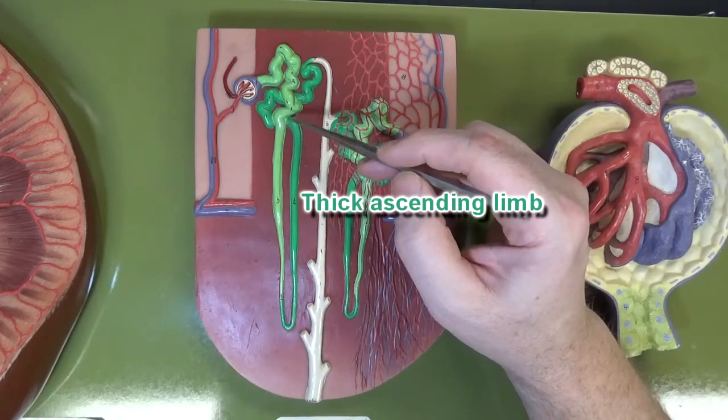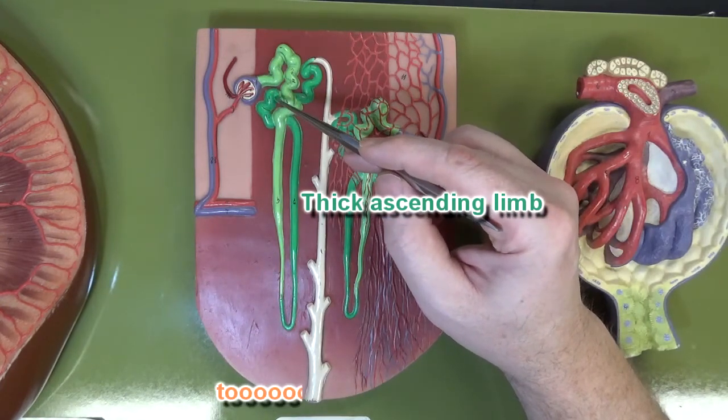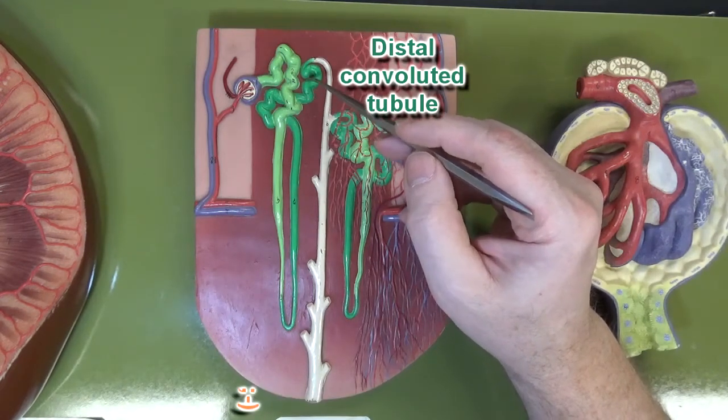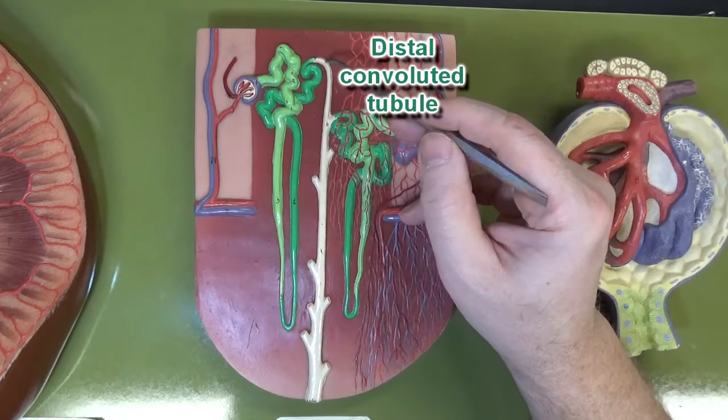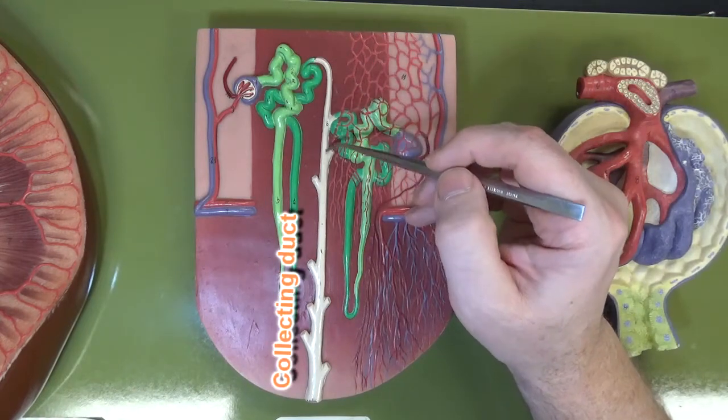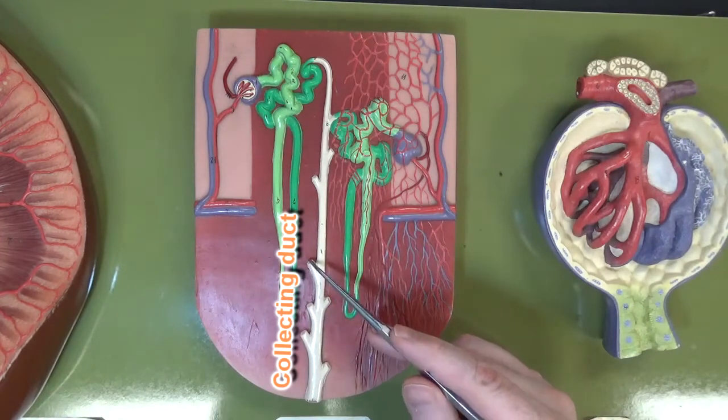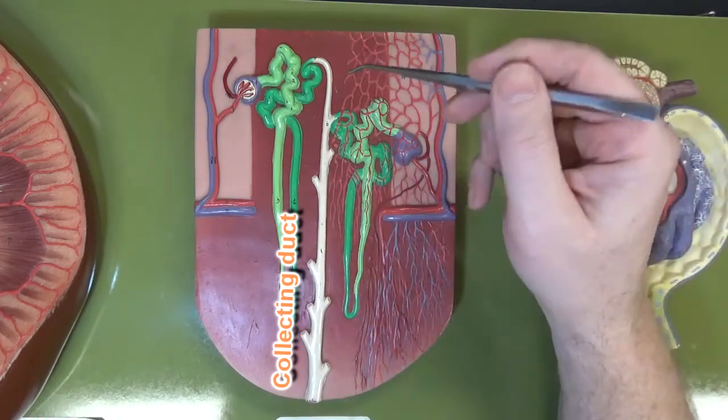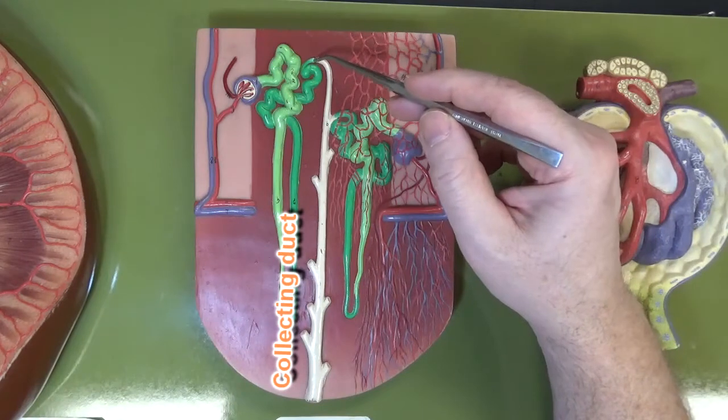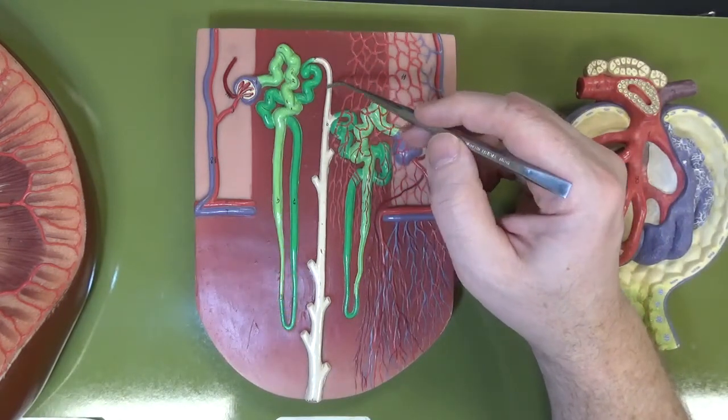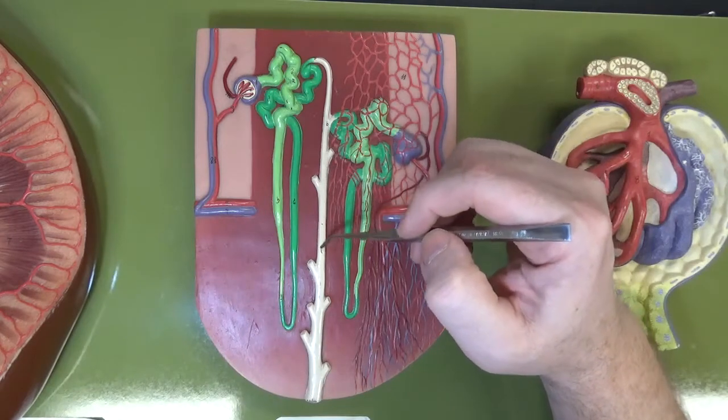This thick ascending limb would continue to the distal convoluted tubule. Distal convoluted tubule will dump its filtrate into the collecting duct, which is this yellow structure right here. And you can see where there would be many distal convoluted tubules attached to the collecting duct. Now by the time the filtrate gets to the collecting duct, it's considered urine.